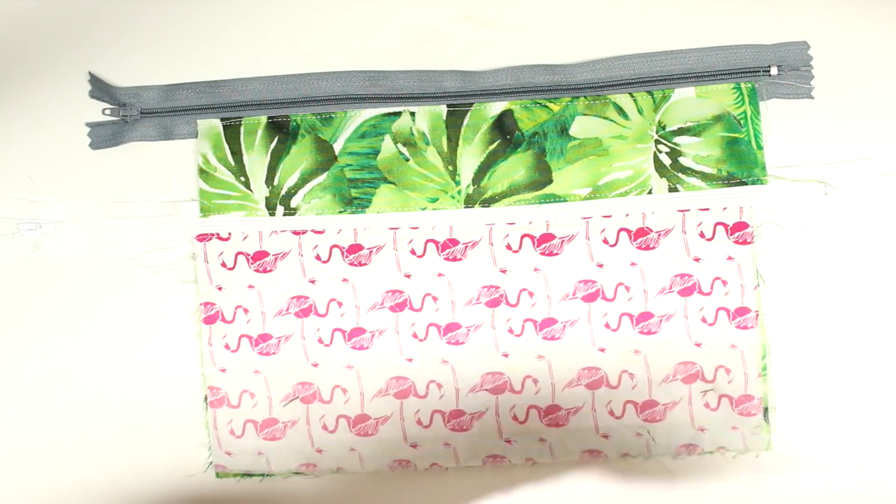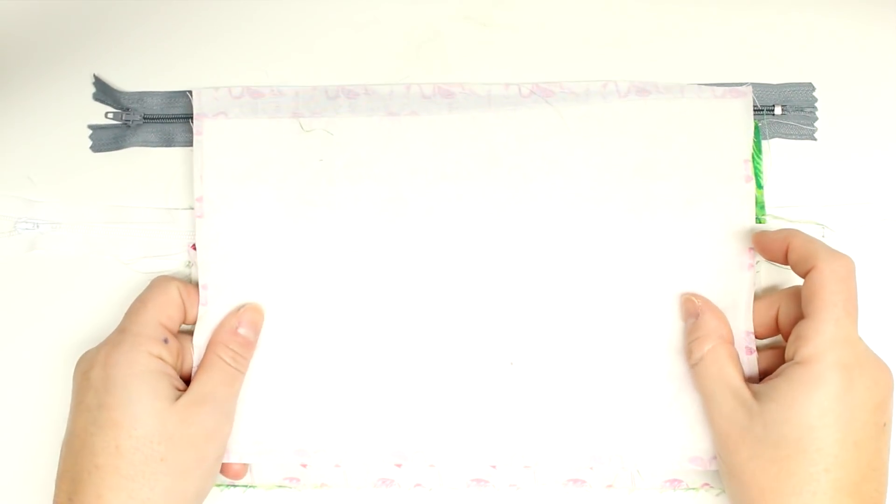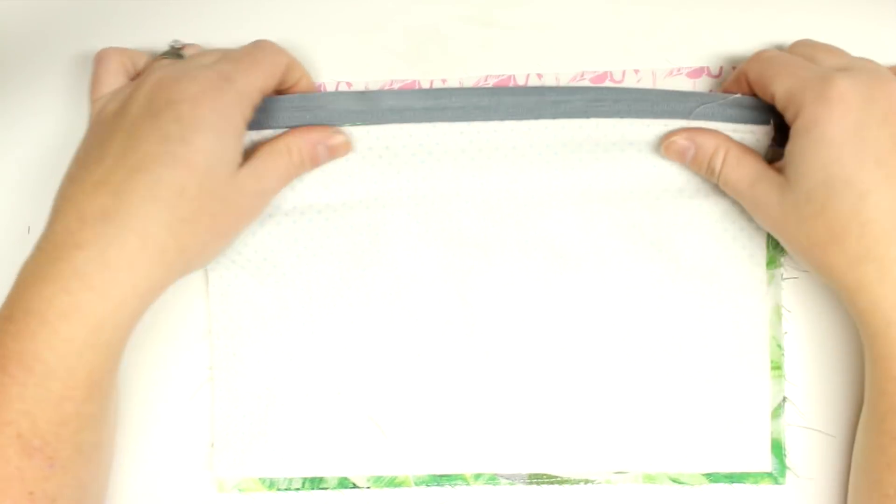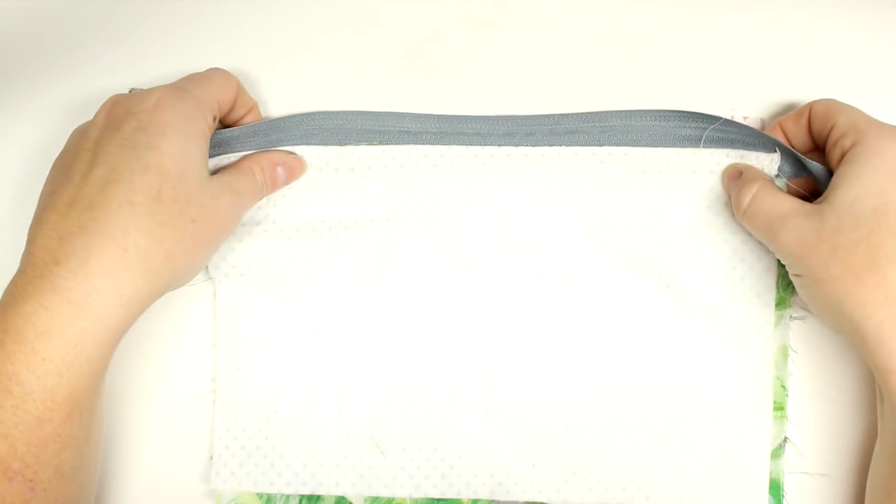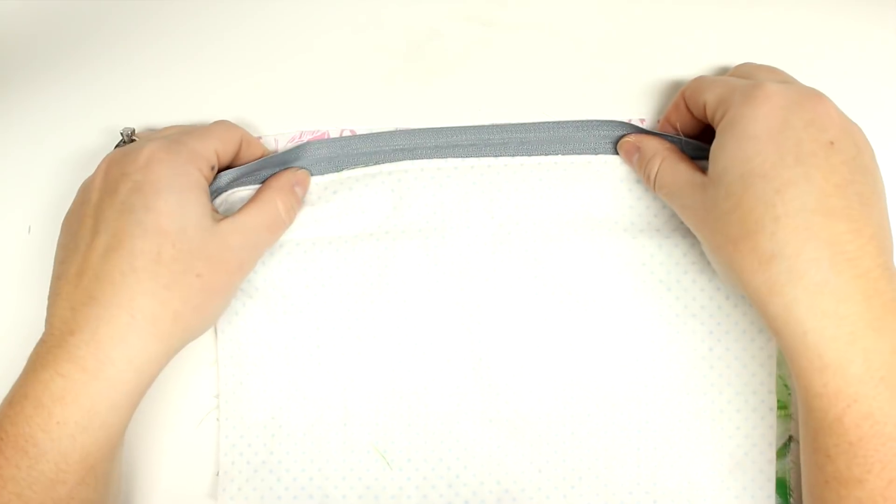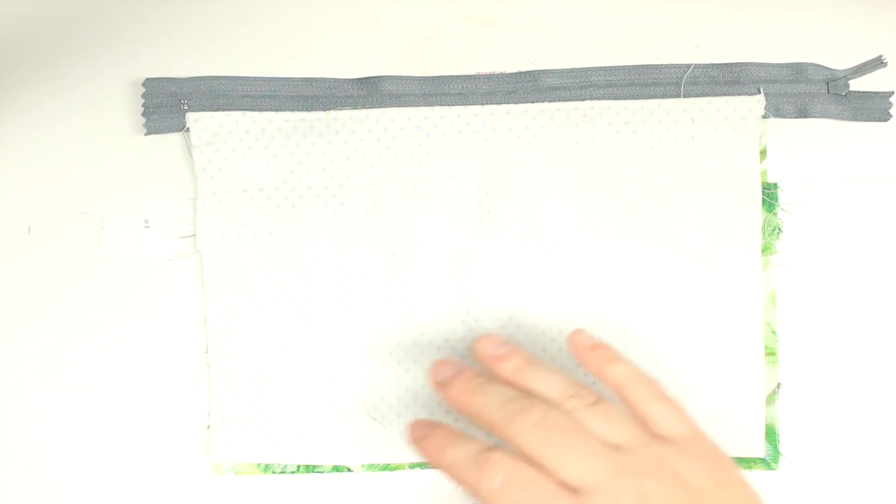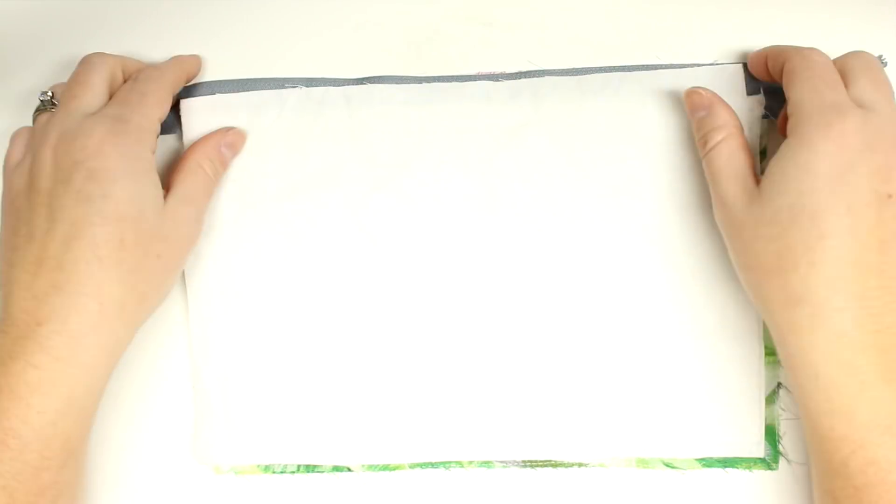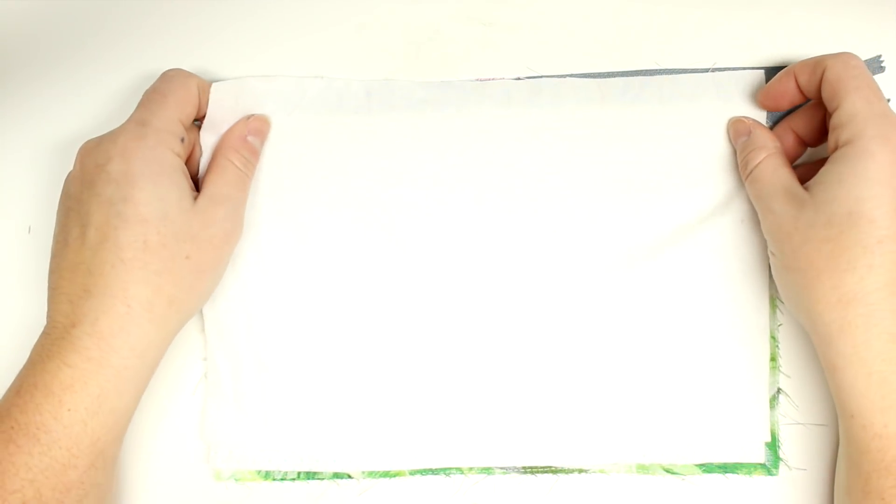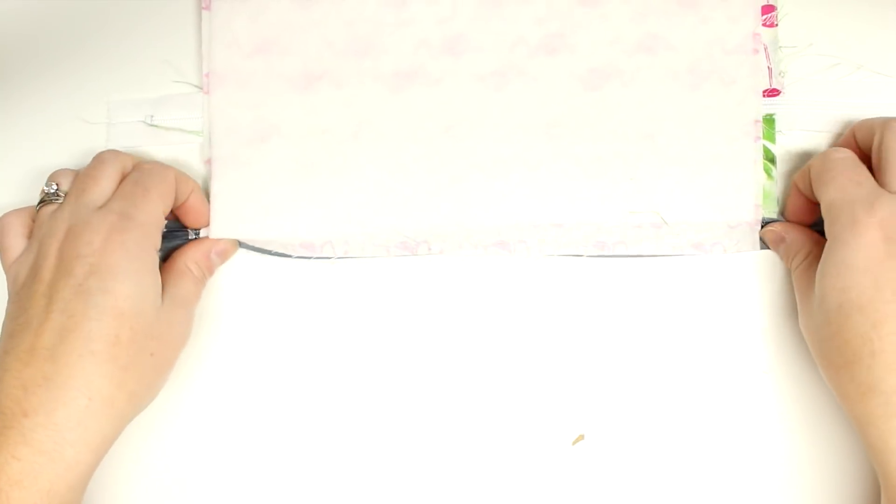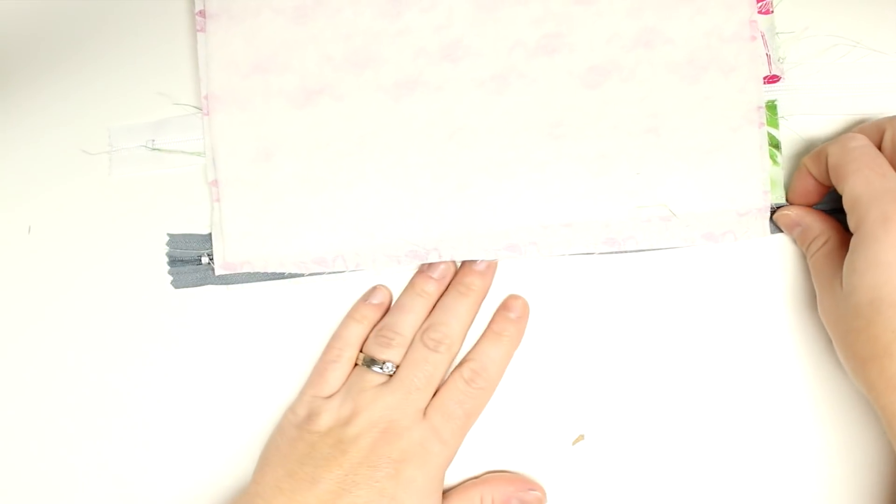And then we will again do the last half of the zipper. We're going to take the back piece of the outer fabric, lay that on top. So make sure that the zipper pull is towards the outer fabric and then we'll put the last piece of lining and then we'll finish installing the other half of the zipper.